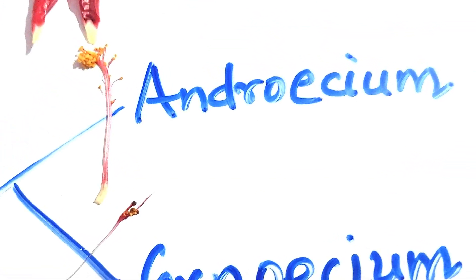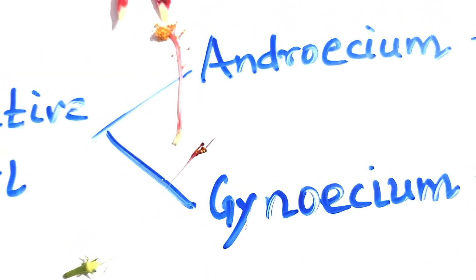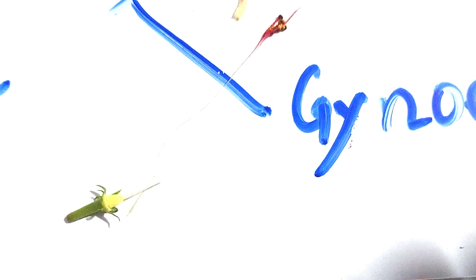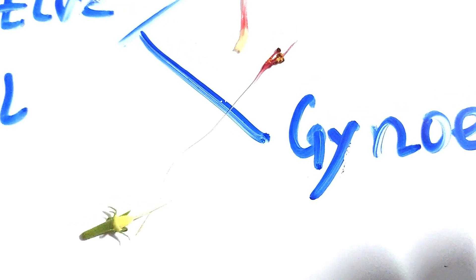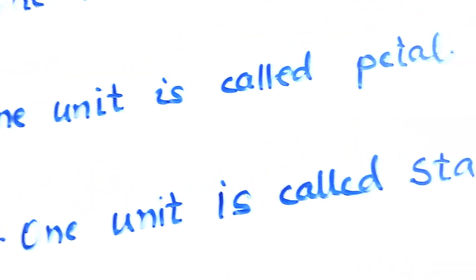You can see I have kept it separately. Androecium, this is the male part, and this is the gynoecium, the female part. The female part has three parts you can see here. One unit is called a stamen and one unit is called a carpel or pistil.